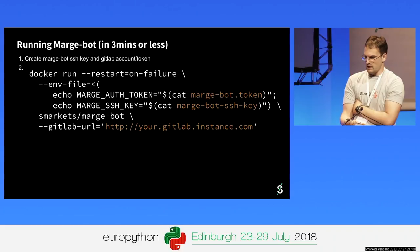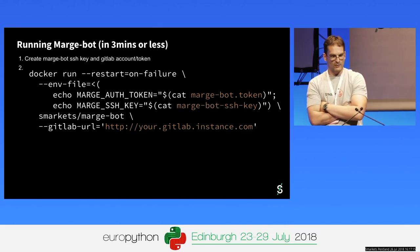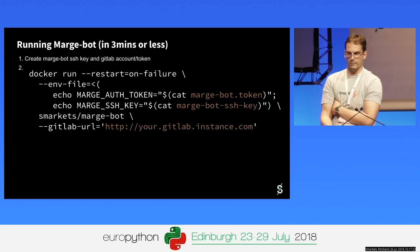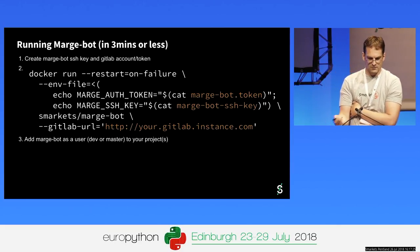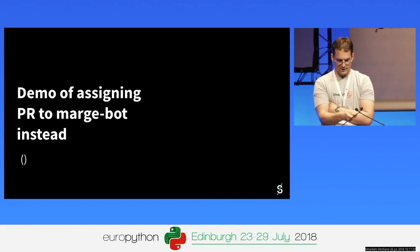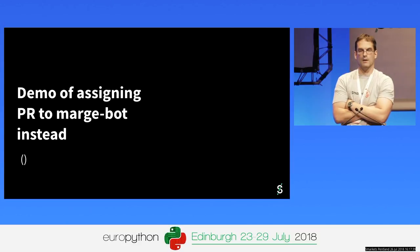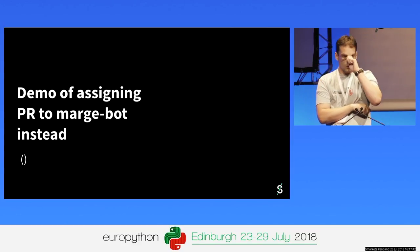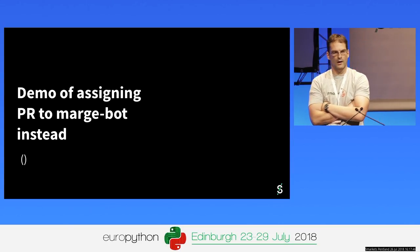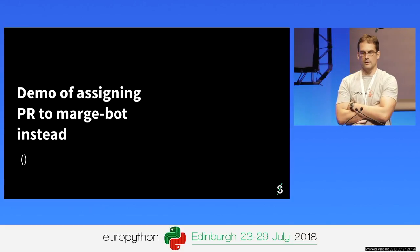It's quite simple to set Marchbot up. You basically create an SSH key, create a GitLab account and token, and then type in one command line. There are three things to supply: the SSH key, the token, and your GitLab URL — and that's it. You then add Marchbot to all the projects you want it to take care of. The workflow is exactly the same as you'd normally use with GitLab, except instead of pressing merge when the build succeeds, you assign to Marchbot. If it succeeds, it will merge; if it doesn't, it will leave a comment and reassign it back to you telling you what the problem was.